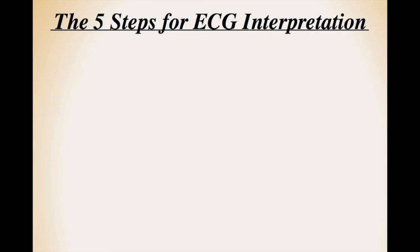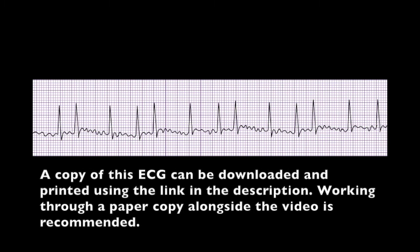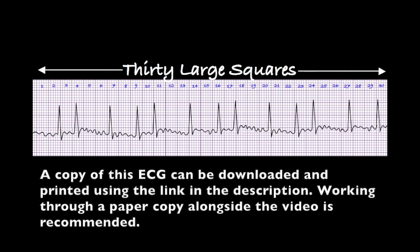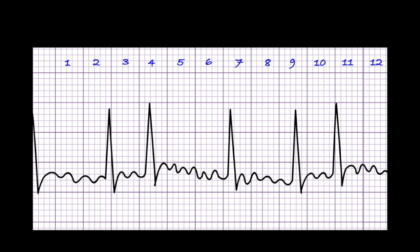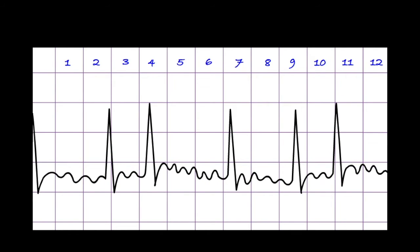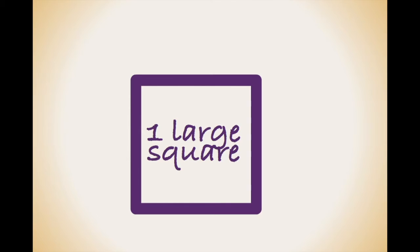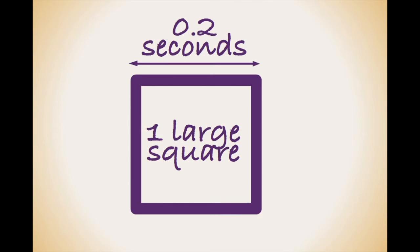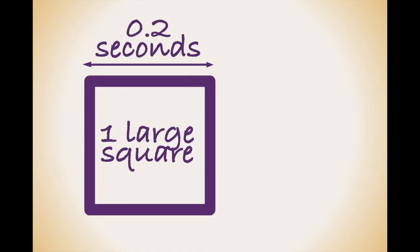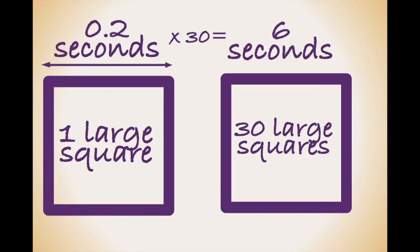The first thing I want to do is work out the rate. I'm going to start by counting out 30 large squares from left to right on my rhythm strip. I only want to look at the large squares at this stage, so I hide the small squares to keep things simple. Every large square represents 0.2 of a second, therefore 30 large squares represents a six second time period.